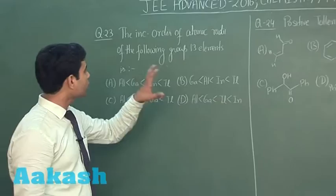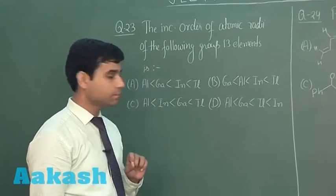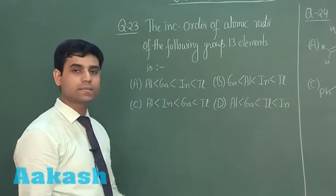This is the next question. The increasing order of atomic radii of the following group 13 elements is we have aluminum, gallium, indium and thallium.